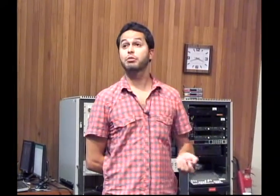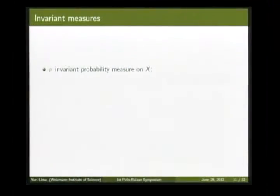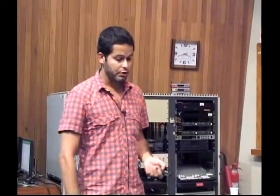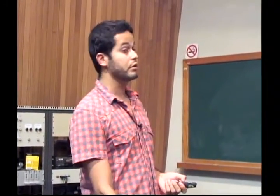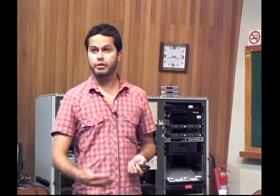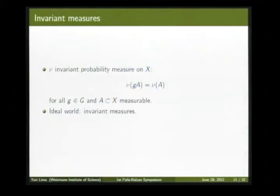We can ask for invariant measures on this setup. A measure is going to be invariant if it is preserved under the action of every element of the group — for every g in G and every measurable subset A of X, the measure of g(A) equals the measure of A. In the classical setup we always have invariant measures, and ergodic theory deals with this situation. But when you consider large groups, there is no such ideal world — for example, the free group acting on a space of sequences may have no invariant measures.